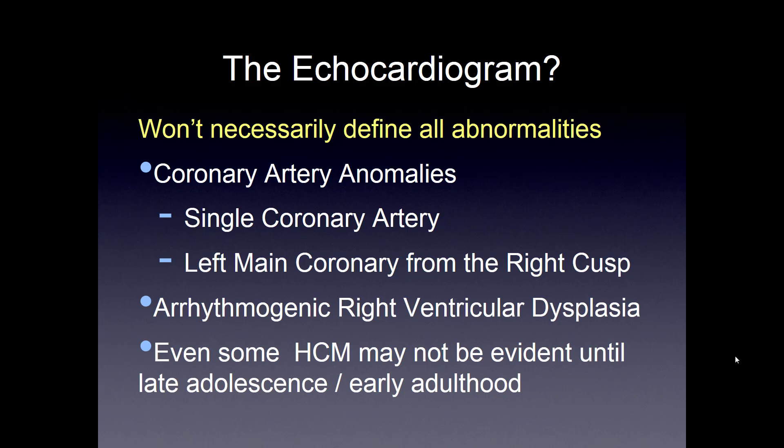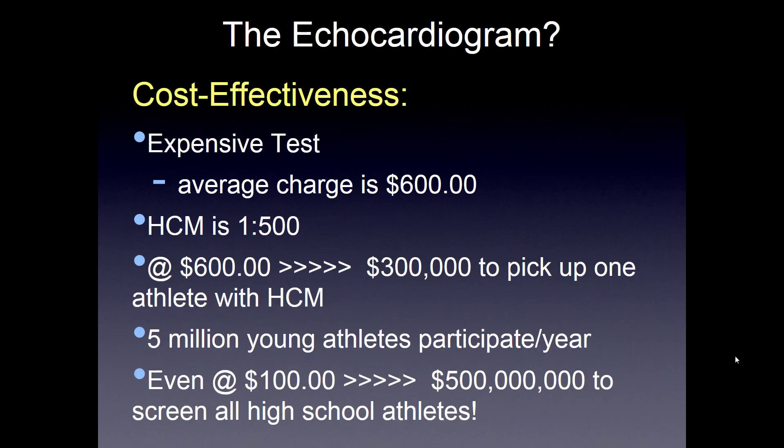Even some hypertrophic cardiomyopathy may not be evident until late adolescence or early adulthood. The echocardiogram is very expensive — the average charge is about $600. Given that hypertrophic cardiomyopathy occurs in 1 in 500, it costs about $300,000 to pick up one athlete with the condition. With 5 million young high school athletes, even if we screened them for $100 each, it would be $500 million to screen all those athletes.